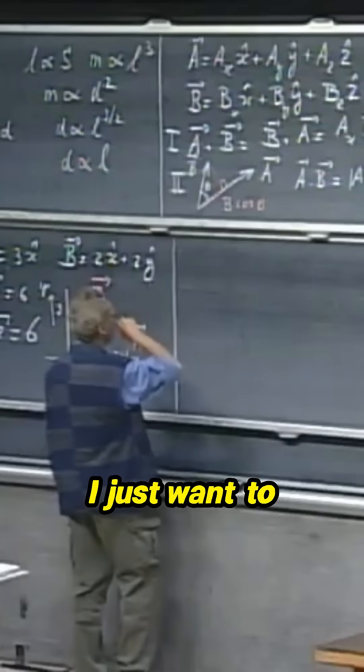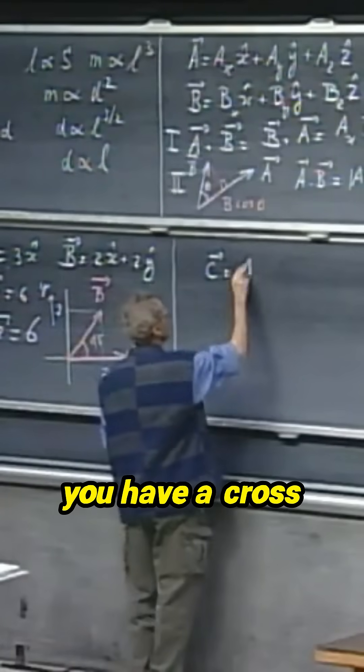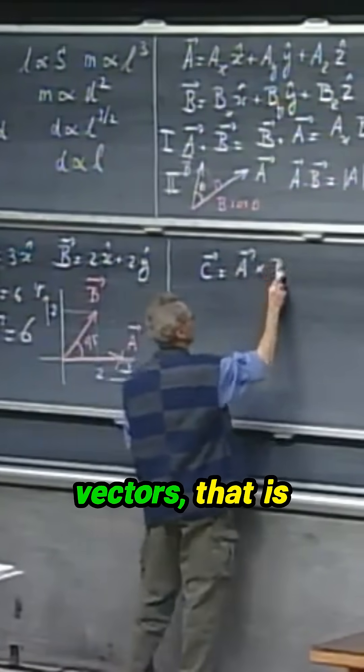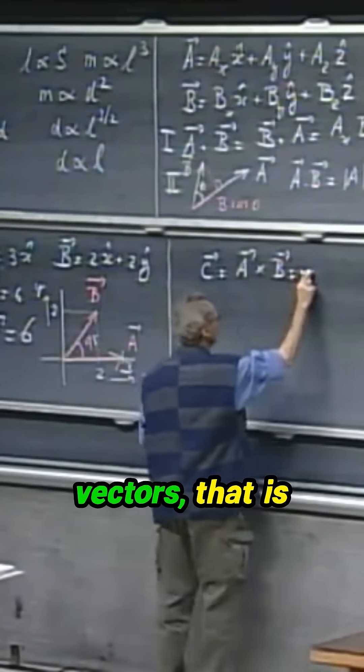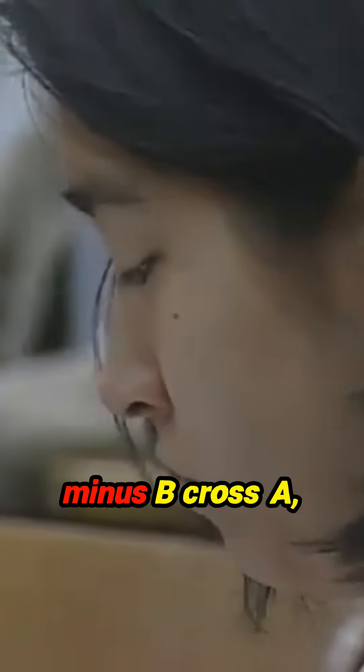I just want to remind you that if you have a cross product of two vectors, A cross B, that is minus B cross A.